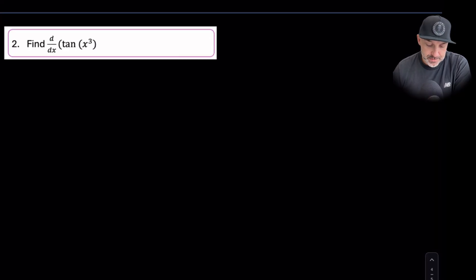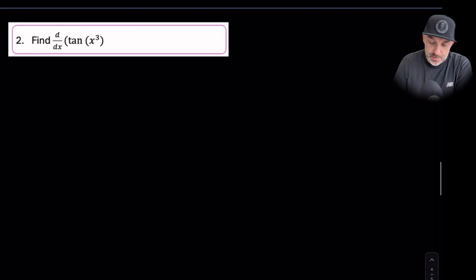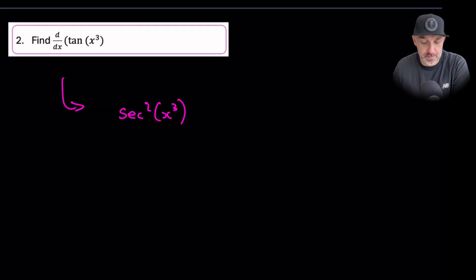Question 2. Simply differentiate tan x cubed. Now this is a little bit easier than question 1, I think, because we know that the derivative of tan will become sec squared. This value stays exactly the same inside there, that function of x.